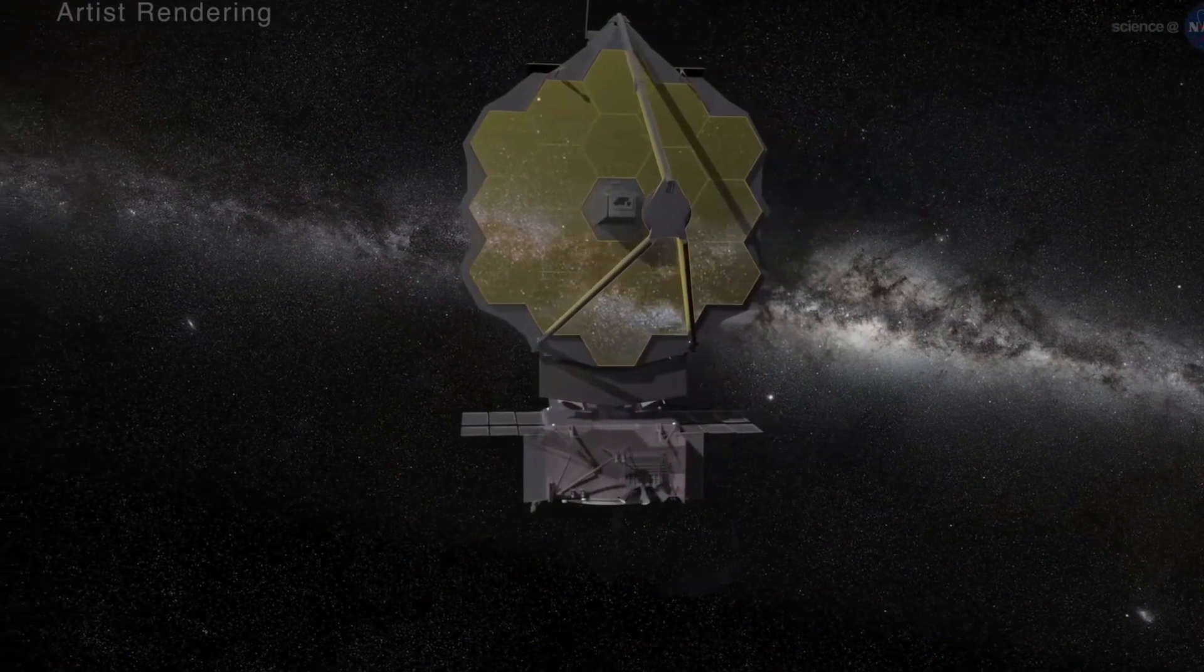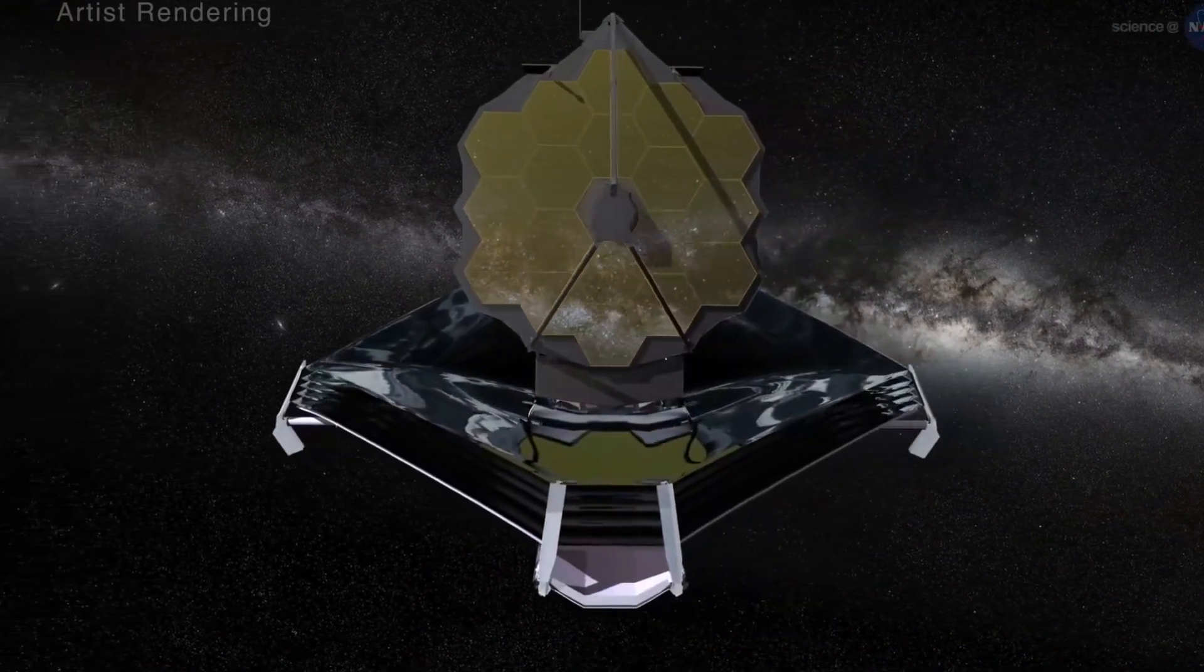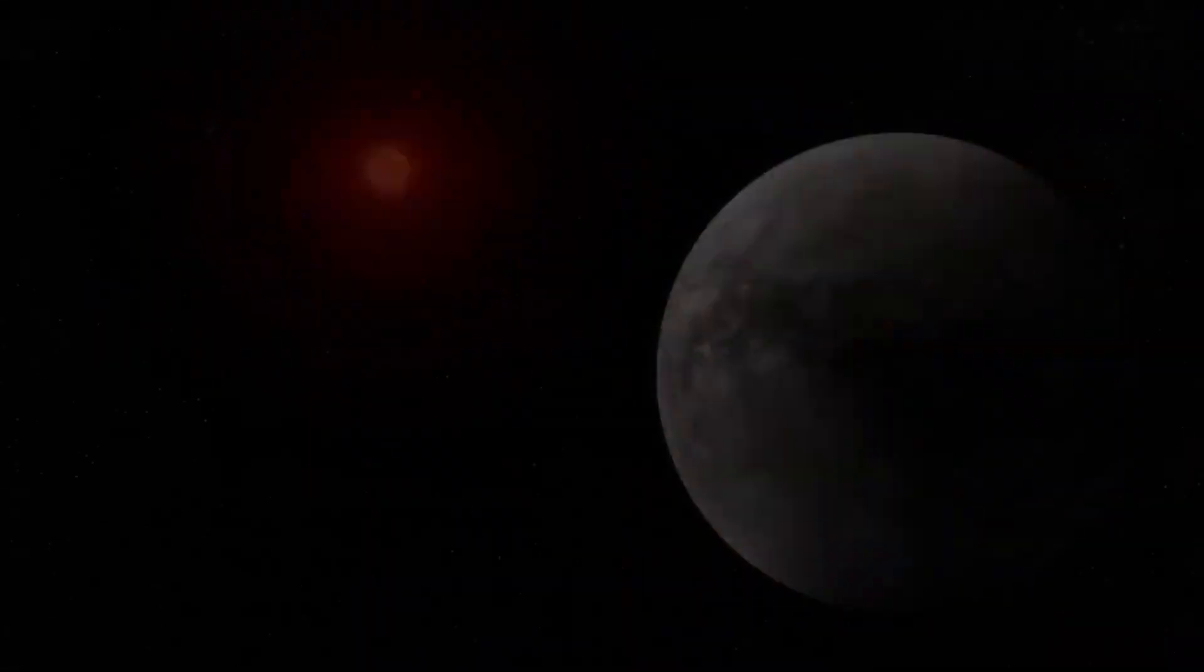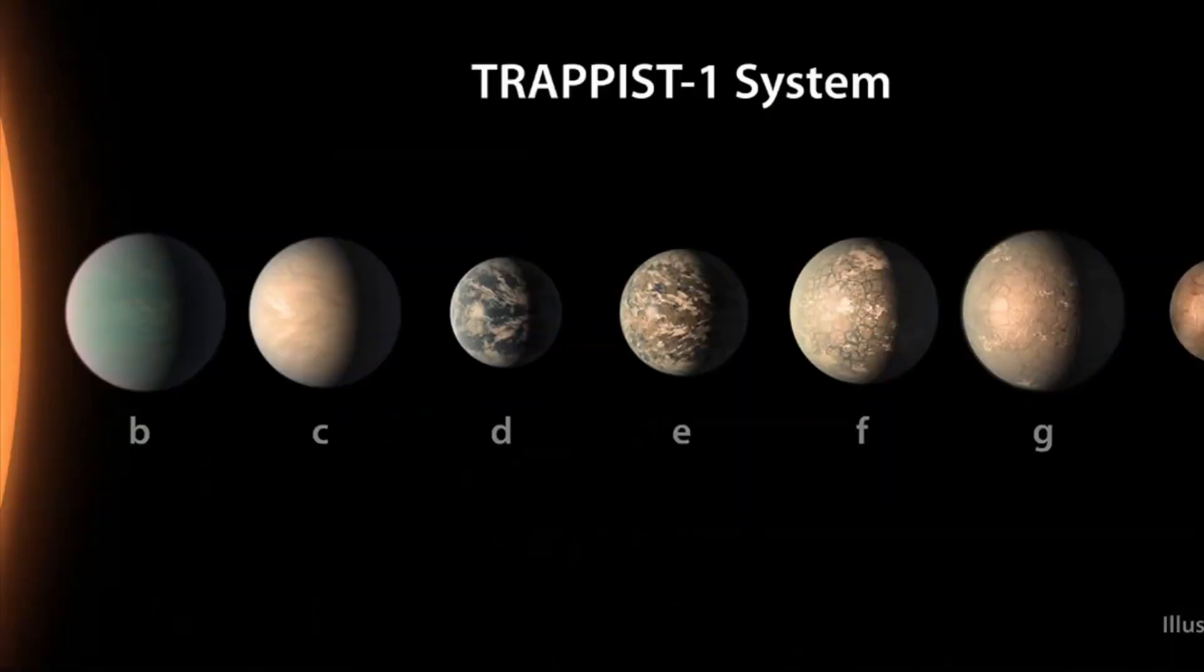This is a good sign for Webb's ability to use MIRI to learn about temperate exoplanets about the size of Earth. Thomas Greene, an astrophysicist at NASA's Ames Research Center and the study's lead author, said these discoveries really take advantage of Webb's mid-infrared capability.